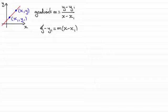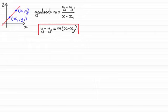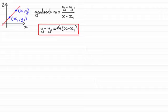Rearranging, we end up with: y minus y1 equals m times (x minus x1). This is the equation I'm going to encourage you to remember — it's much easier to work with than y equals mx plus c. This is another form for the equation of a straight line when you've got the gradient m and a known fixed point x1, y1, where x and y represent any general point on the line.